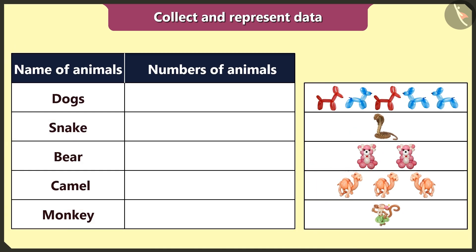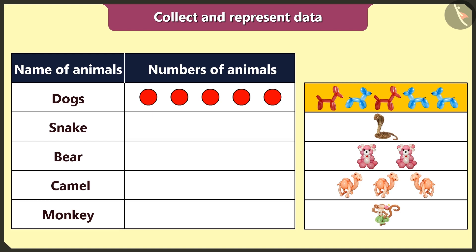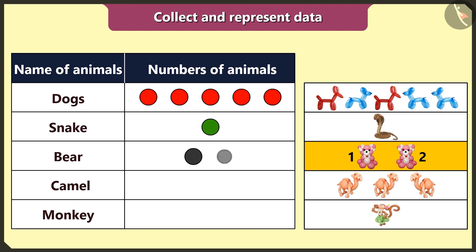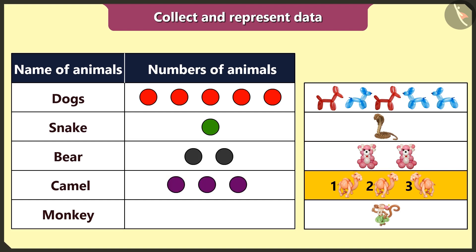Now I will make a table like this and represent all the data in it. There are five dogs, so five circles. One snake, so one circle. Two bears, so two circles. Three camels, so three circles. And one monkey, so one circle.